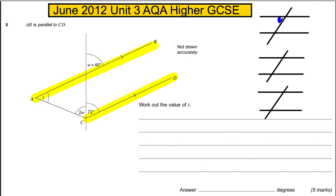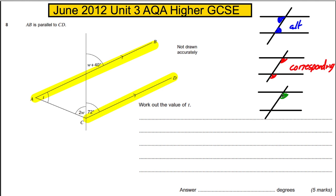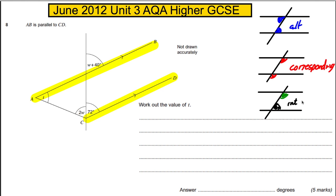The rules are as follows: you have Z angles, or using the proper term, alternate angles, which are equal. You have F angles, or corresponding angles, which are equal. And you have interior angles, which add up to 180 degrees. So those are the rules we're playing around with.